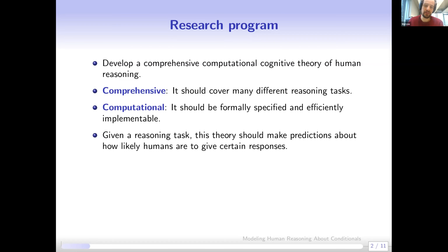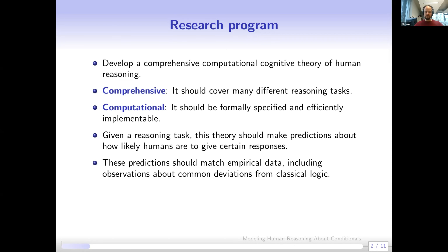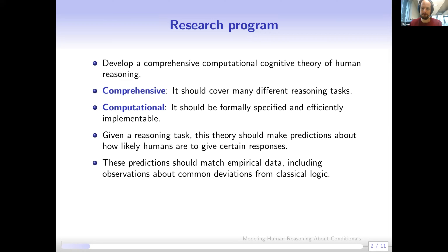The idea is that given a certain reasoning task, the theory should make predictions about how likely humans are to give certain responses, and we want these predictions to match empirical data as much as possible. For many decades it has been clear from empirical research that humans often deviate from classical logic in a systematic way, and we also want to be able to predict these systematic deviations.